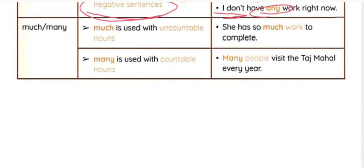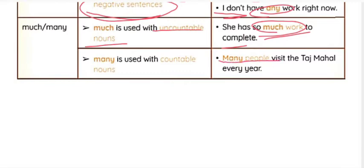Moving on to much and many. Much is used with uncountable nouns. For example: 'She has so much work to complete' — we cannot count the work. Many is used with countable nouns. For example: 'Many people visit the Taj Mahal every year' — this is a countable noun.